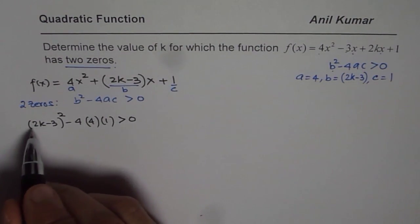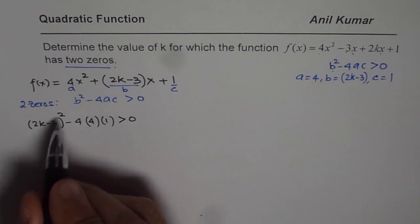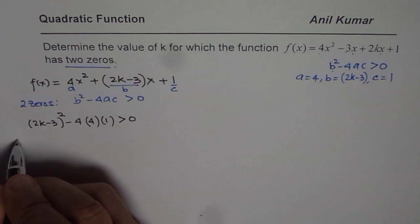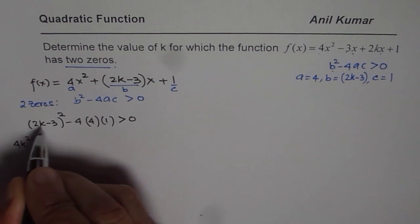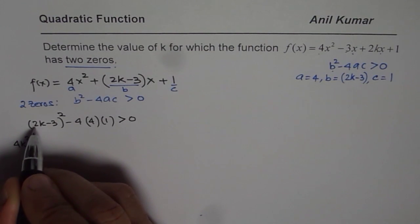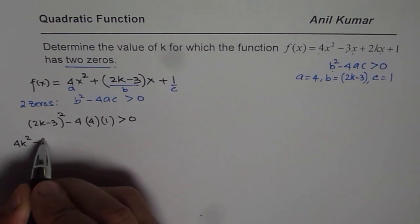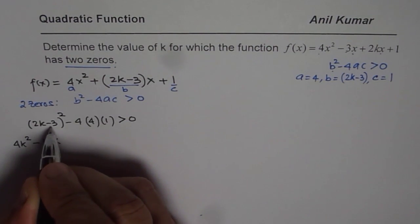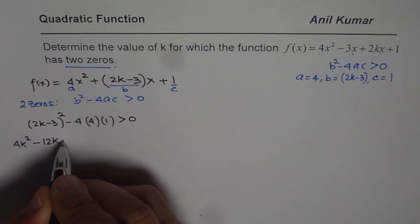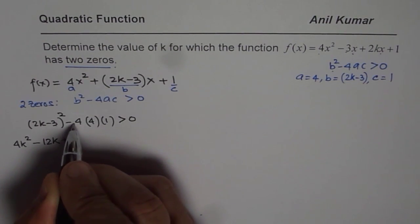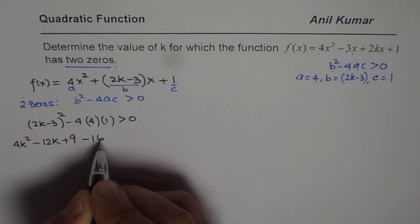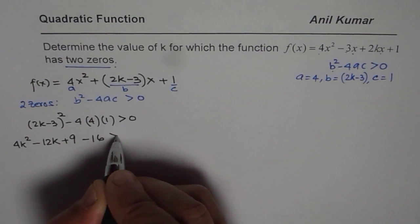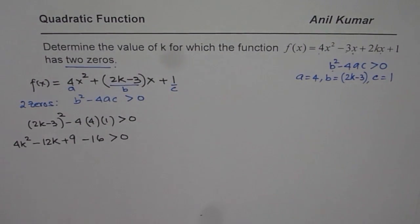This is the inequality which we need to solve. Let us expand (2k minus 3) whole squared. When you expand it, you get 4k squared minus 2 times 2 times 3, which is 12k, plus 9. Then minus 4 times 4 is 16 with a minus sign. That should be greater than 0.